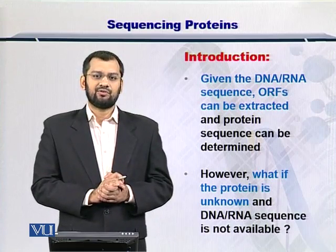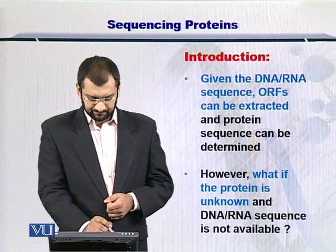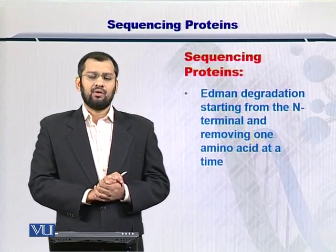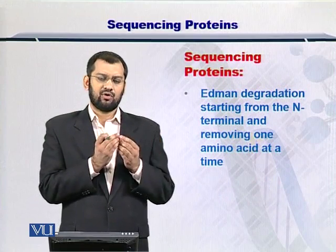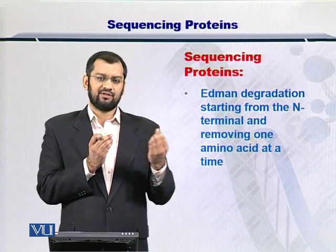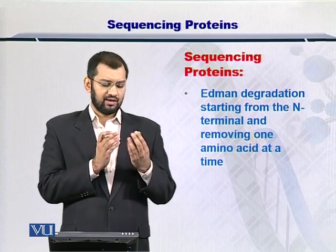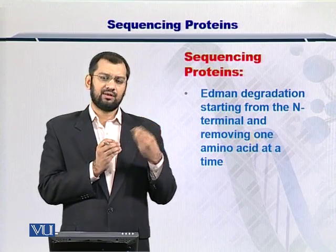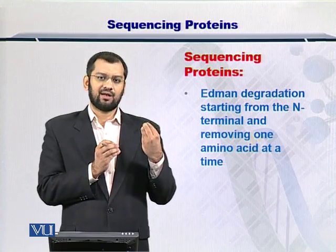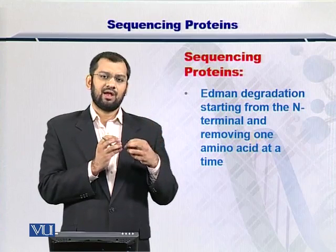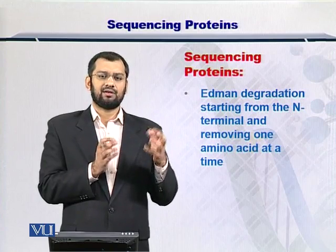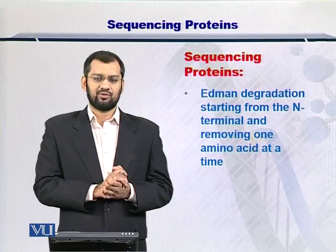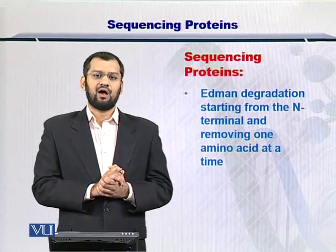To help you in that situation, there is a process known as Edman degradation. What Edman degradation does is that if you have a long sequence of amino acids — the polymerized chain forming the protein — it starts plucking one amino acid at a time from the N-terminus of the entire protein. And in this way, by taking out one amino acid at a time, it arrives at the entire sequence of that protein.